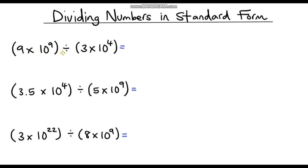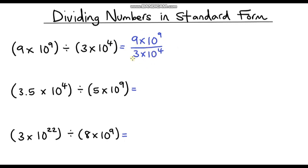In the first example we've got two numbers written in standard form: 9 times 10 to the power 9, divided by 3 times 10 to the power 4. The way I like to do this is to rewrite it as a fraction, because we're dividing one number by another. I like to treat the single digit numbers and the powers of 10 separately.